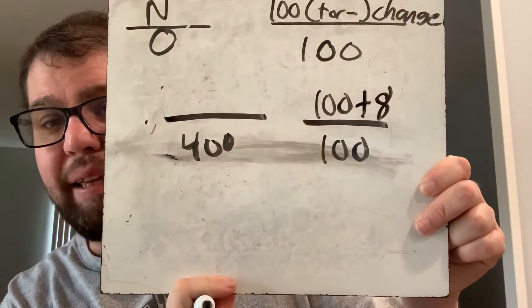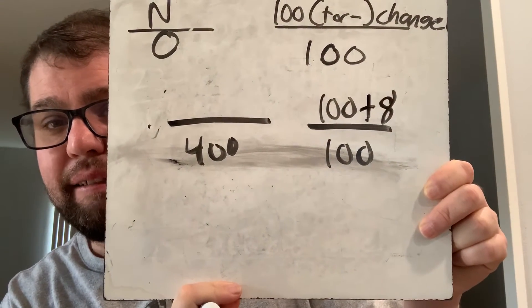I know the original price was $400. I know the bottom right number is always 100. I know the top number is a hundred, but this time because it's a tax I have to add eight, making it 108. I have my variable x, I cross multiply, and I get 100x equals 43,200.